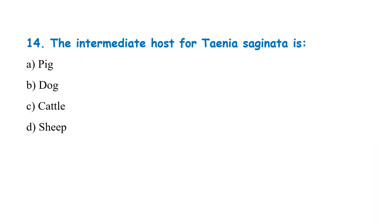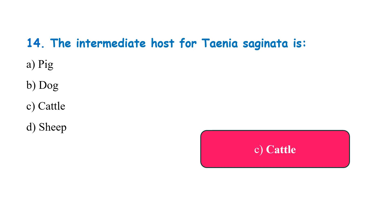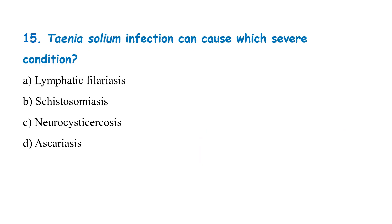The intermediate host for Taenia saginata is pig, dog, cattle, or sheep? The correct answer is cattle. Taenia solium infection can cause which severe condition? Lymphatic filariasis, schistosomiasis, neurocysticercosis, or ascariasis?